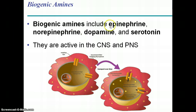The amines include epinephrine and norepinephrine, which drive your fight-or-flight response. Dopamine and serotonin are associated with parts of the brain involved in emotion and feelings of well-being, as well as regulation of movement — like L-DOPA associated with Parkinson's disease.